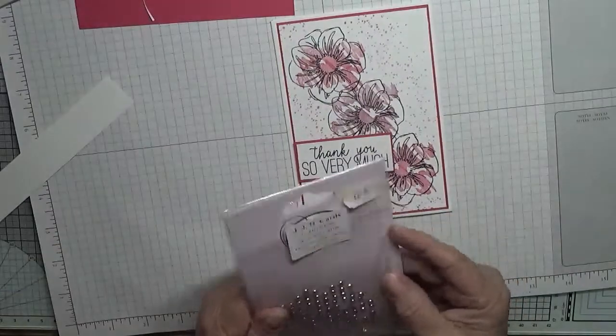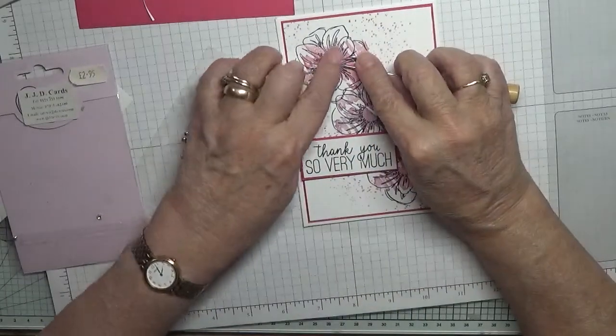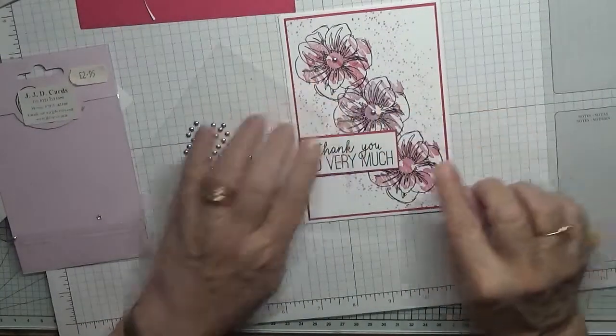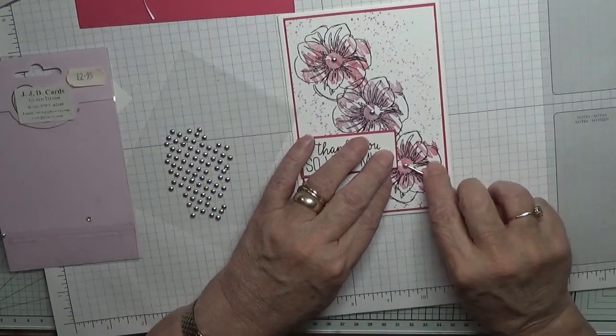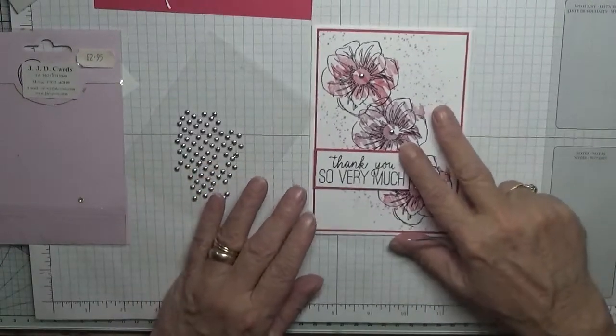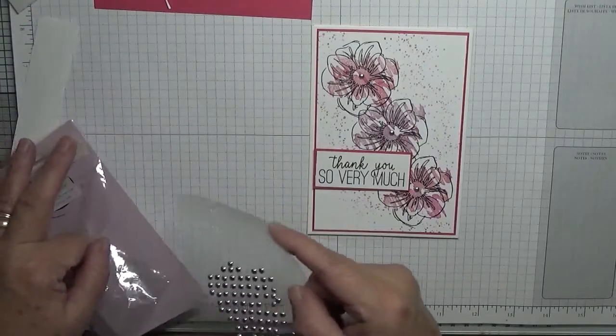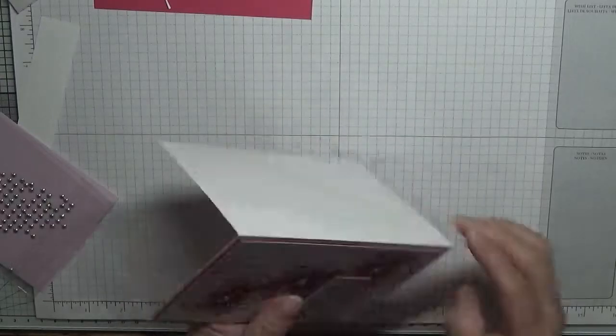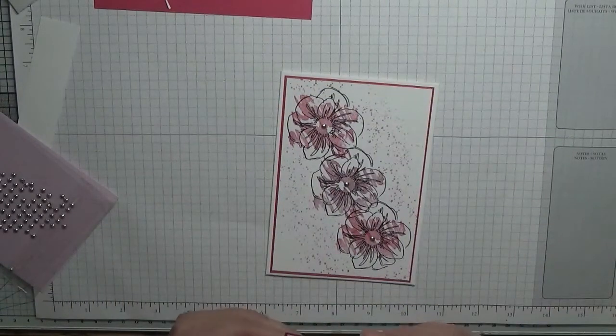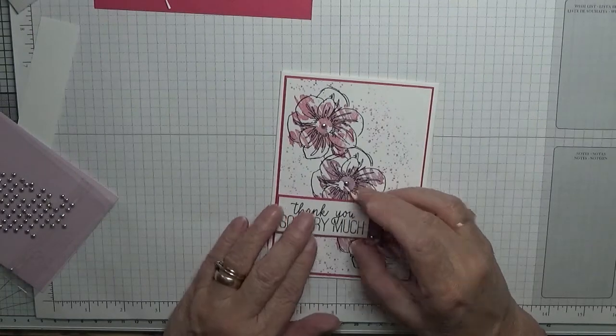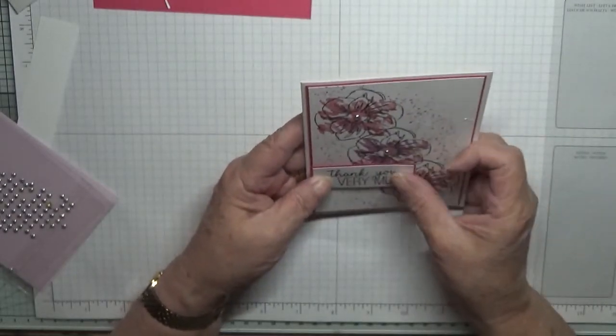All we've got to do is add some gems. All I did with this is just place one of these inside the middle of each flower. There they are. I'm only going to put that on the wrong way. There they are.